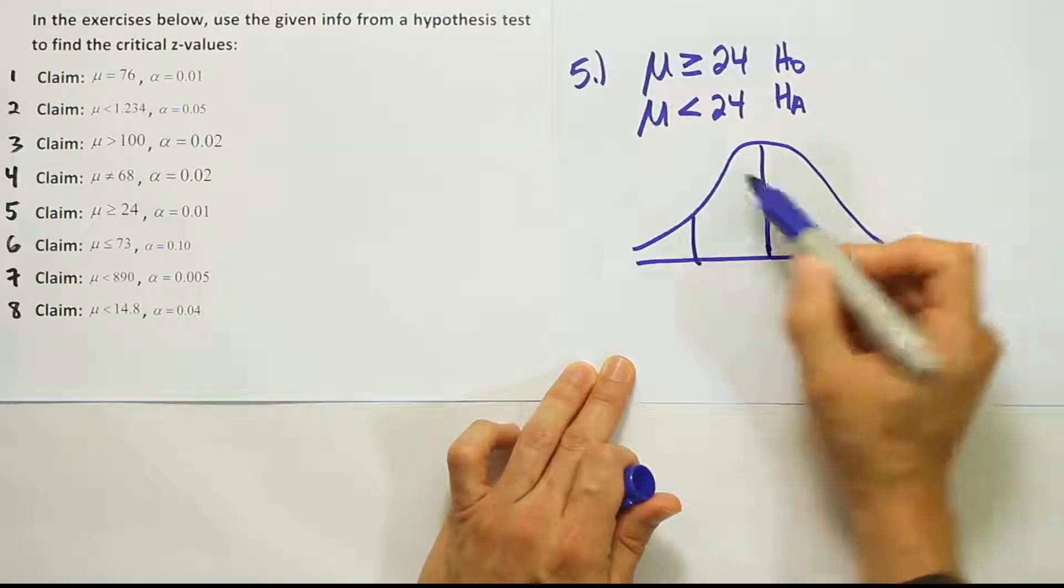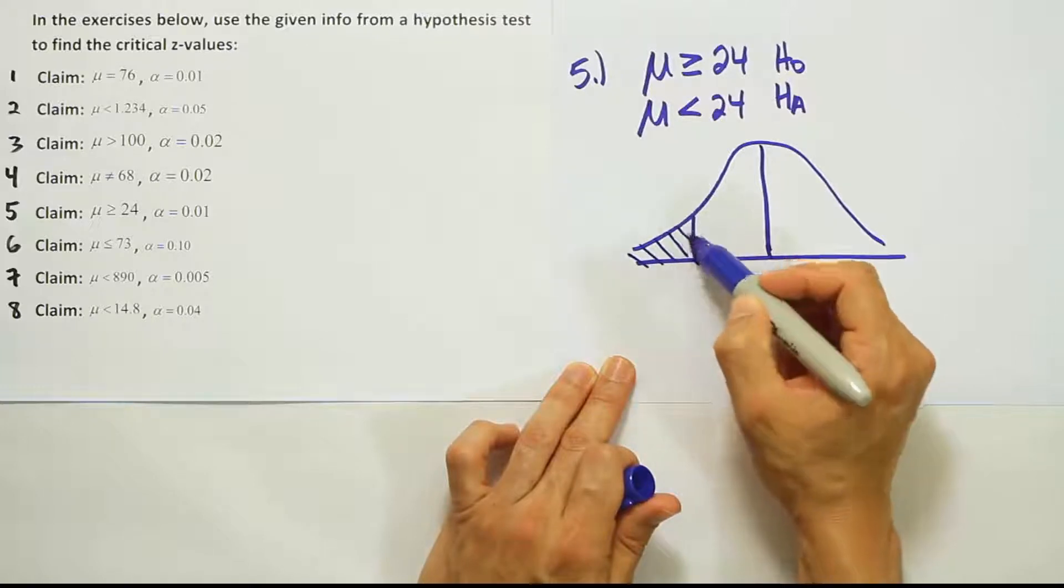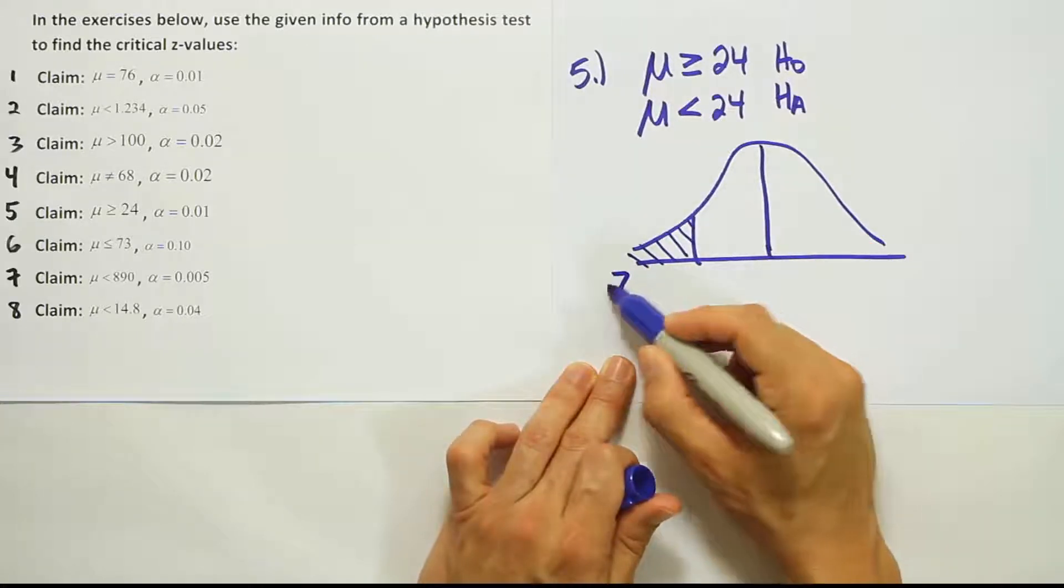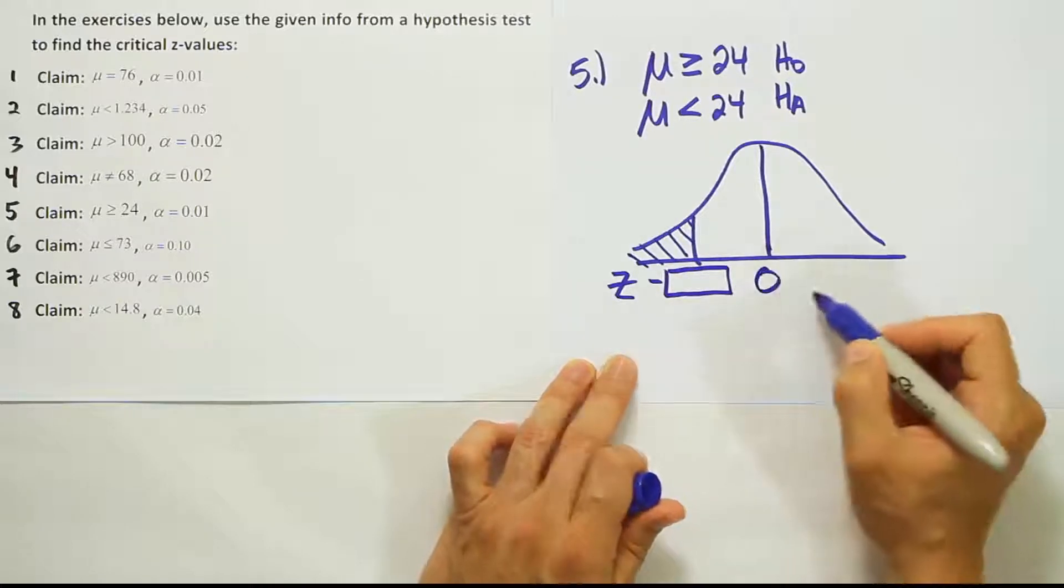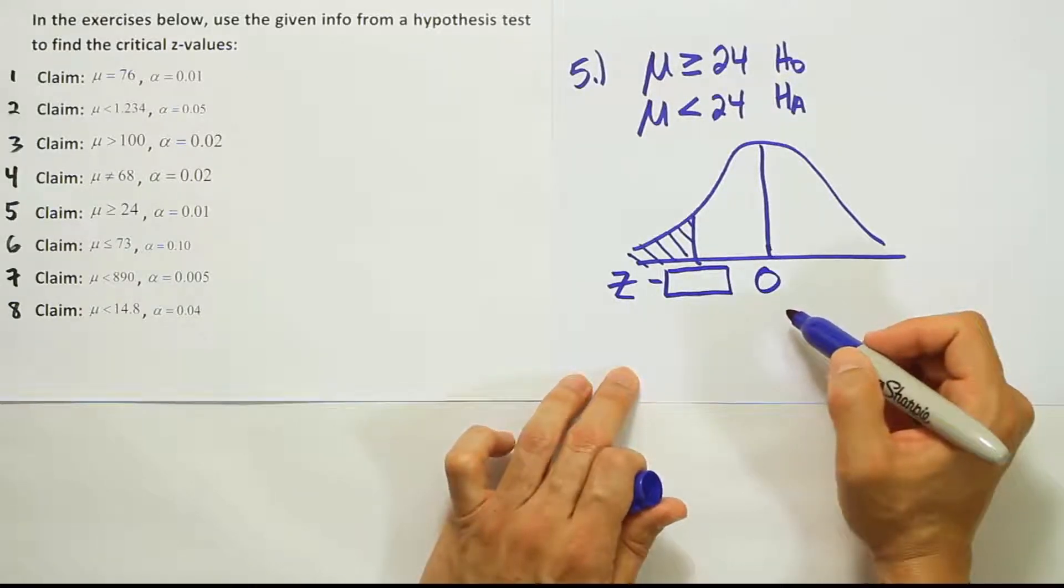Because whenever we have less than for HA, we have a left-tailed test. Right? So we're looking for a negative critical value here on the left, and we're going to find that by looking up alpha.